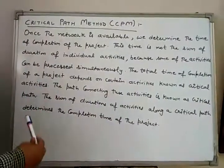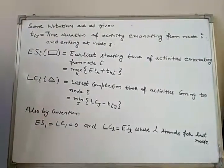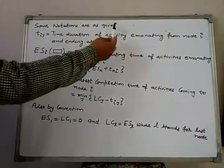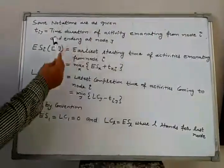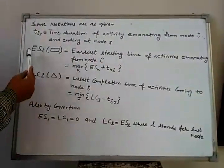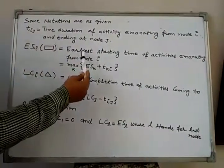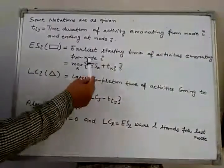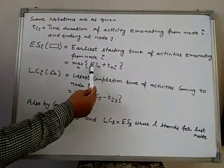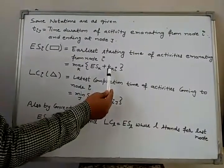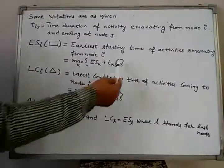Now we will discuss how to find the critical path. Before going into the discussion of critical path determination, let's first define some notations. Tij represents the time duration of the activity emanating from node I and ending at node J. Then, capital E capital S I, represented by a rectangle, is the earliest starting time of activities emanating from node I. Mathematically, it is calculated as the maximum over K of the earliest start time of the Kth node plus the time duration of the activity emanating from node K and ending at node I. This will be explained in the example.